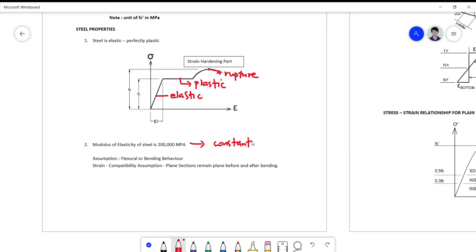So there's an assumption here that for flexural or bending behavior, the strain compatibility always exists. This strain compatibility assumption simply states that plane sections remain plane before and after bending.